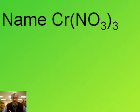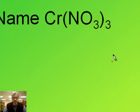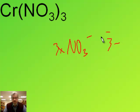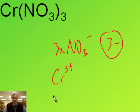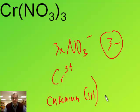Name Cr(NO3)3. Nitrate NO3 is one minus. We've got three of them, so that means a three minus charge. So the chromium must be three plus. When I write the name, I write chromium, Roman numeral three, and then the name of the anion: nitrate.